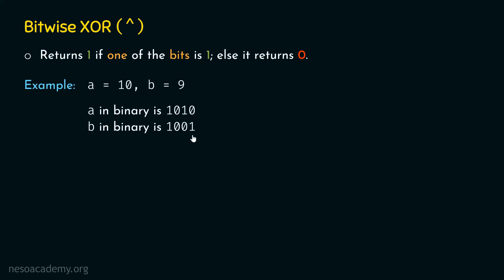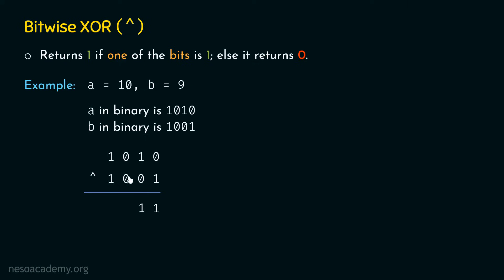We consider just the magnitudes: 1010 XOR 1001. Going bit by bit: 0 XOR 1 = 1 (one bit is 1); 1 XOR 0 = 1; 0 XOR 0 = 0; 1 XOR 1 = 0. The result is 0011, which has a decimal equivalent of 3.